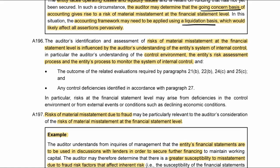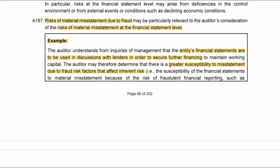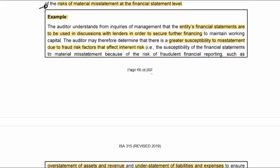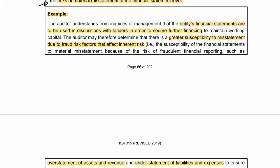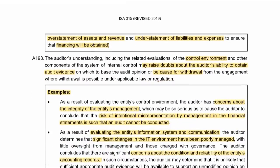The risk at the financial statement level is influenced by the control environment, risk assessment processes, and monitoring. Always remember the risk of material misstatement due to fraud and how that could affect risks at the financial statement level. For example, if the entity's financials are going to be used in discussions with lenders to secure further capital, there is now greater susceptibility to misstatement due to fraud so that they secure that capital.